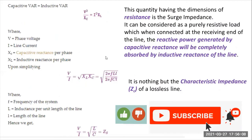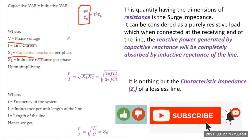We can explain this with the help of a mathematical analysis. The total amount of reactive power supplied by the capacitor is given by V²/Xc, where V is the phase voltage and Xc is the capacitive reactance expressed in ohms. Similarly, the reactive power absorbed by the inductive component is given by I²·XL, where I is the line current.